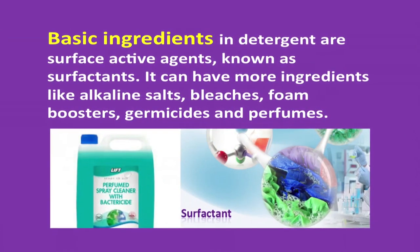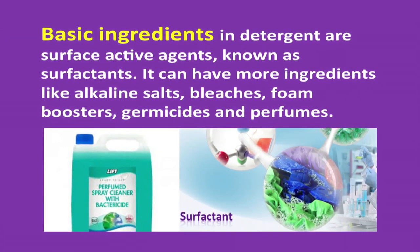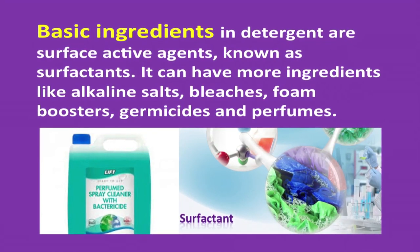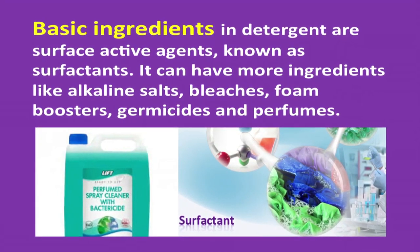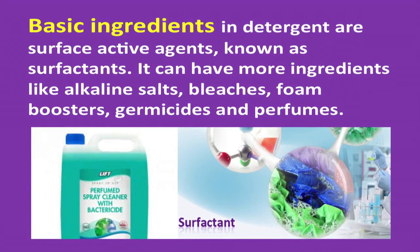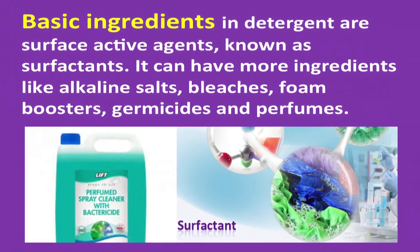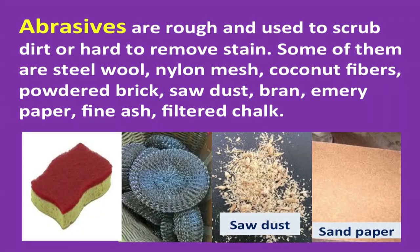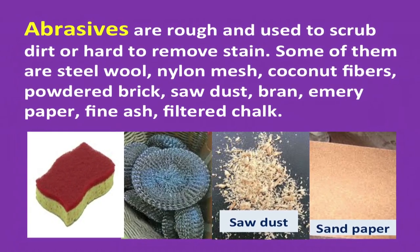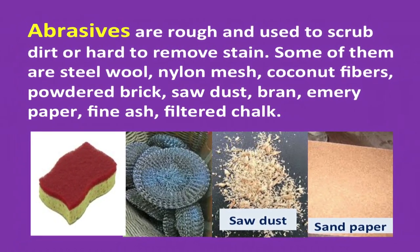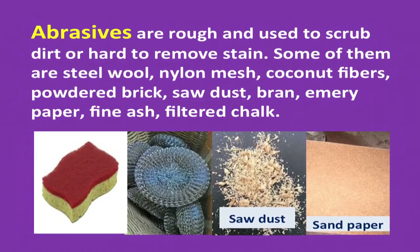The basic ingredients in a detergent are surface active agents known as surfactants. It can have more ingredients like alkaline salts, bleaches, foam boosters, germicides, and perfumes. Abrasives are sand, finely powdered brick, sawdust, weed bran, emery paper, fine ash, filtered chalk, etc. Besides these, steel wool, nylon mesh, and coconut fibers are also used to scrub dirt. Their use depends on the surface to be cleaned and the type of dirt to be removed.